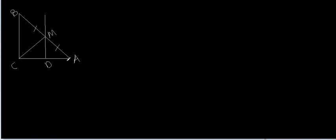In triangle ABC, we have MD parallel to BC, and M is the midpoint of AB. So from the midpoint theorem, we can say that D would be the midpoint of AC. That was the first thing we had to prove.